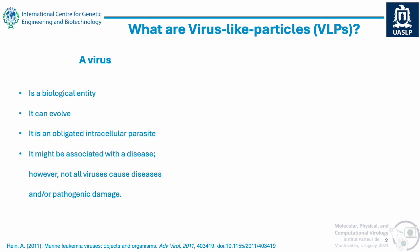A virus is an obligated intracellular parasite. This means that outside of the cell it does nothing. It needs to go inside the cell in order for the virus to become active. It might be associated with disease. However, not all viruses can cause diseases and pathogenic damage. For example, in some viruses, three out of four patients will not know that they were infected. With poliovirus, about 99% of patients do not even know they were infected, and only a small percentage will develop a very severe disease.